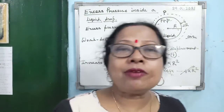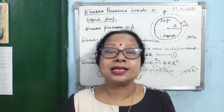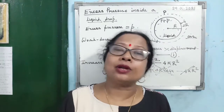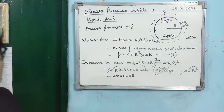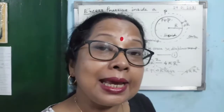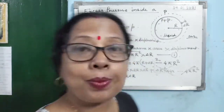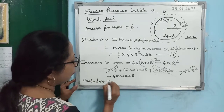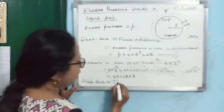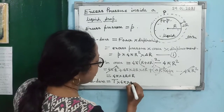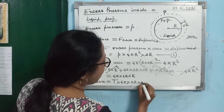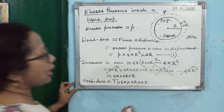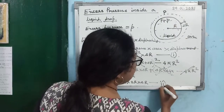From the previous lecture, when the free surface area increases, work done can also be calculated as surface tension T into increase in area. So work done equals T into 4π·2R·ΔR. This is equation 2.